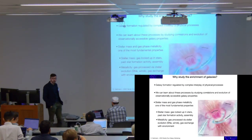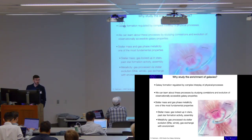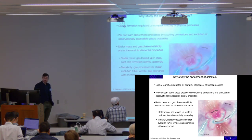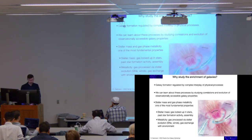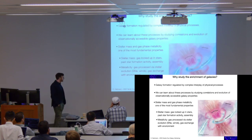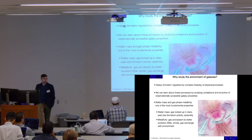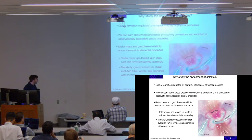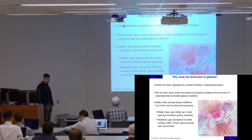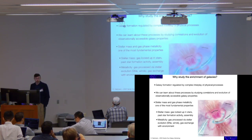Why would we be interested in studying the enrichment of galaxies? We had a talk on Tuesday about this, so I can be super brief. Obviously, galaxy formation is complicated, and we try to learn about the physical processes by studying the correlations we get from the observables. Stellar mass and gas-phase metallicity are two of the most fundamental properties here. The stellar mass essentially tracks the gas locked up in stars, and it's also a trace of star formation activity and potentially of the assembly of galaxies. The metallicity tells us something about how the gas is processed via stellar evolution and how the gas is exchanged via inflows or outflows with the environment of galaxies.